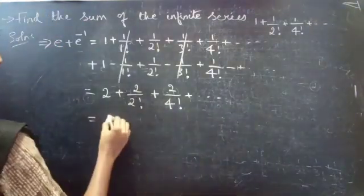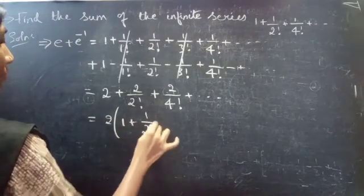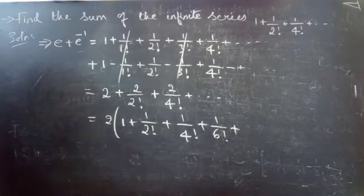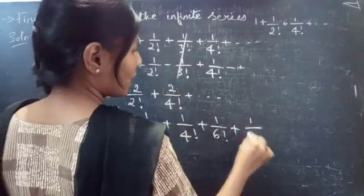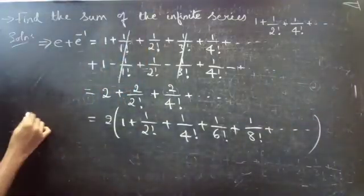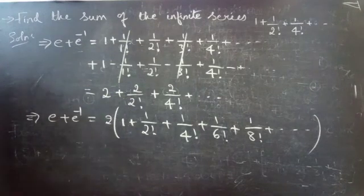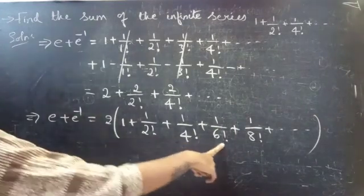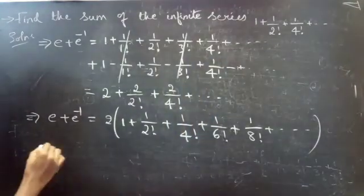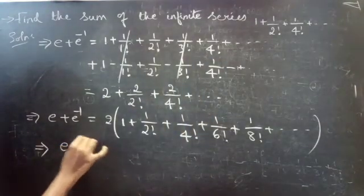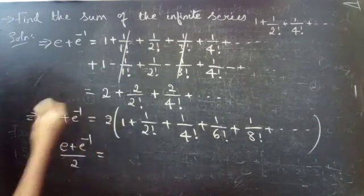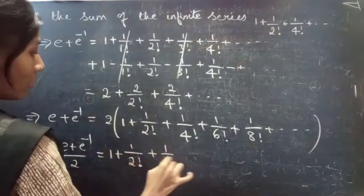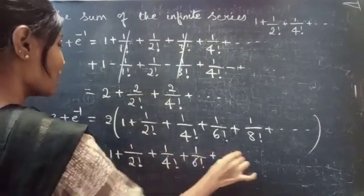So now take 2 common. You will get 1 plus 1 by 2 factorial plus 1 by 4 factorial plus 1 by 6 factorial plus 1 by 8 factorial plus so on — continuously even factorials. So you have e plus e inverse equals 2 into 1 plus 1 by 2 factorial plus 1 by 4 factorial plus 1 by 6 factorial plus 1 by 8 factorial and so on. From this you can write: e plus e inverse by 2 equals 1 plus 1 by 2 factorial plus 1 by 4 factorial plus 1 by 6 factorial plus so on.